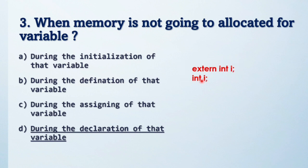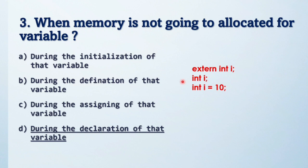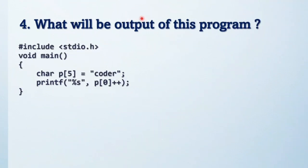'extern int i' is only a declaration — no memory allocation. 'int i' is a definition — memory is allocated. 'int i = 10' means you are assigning or initializing i with the value 10. During initialization and assignment, memory is also allocated. So declaration means no memory allocation; definition, assignment, and initialization all allocate memory.